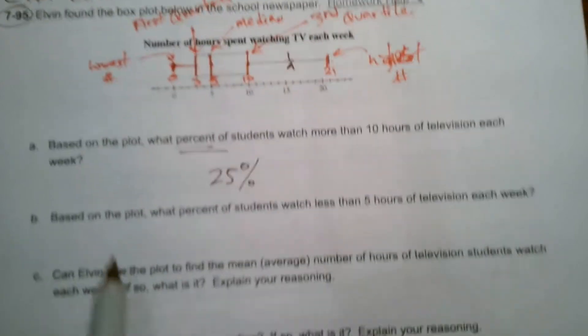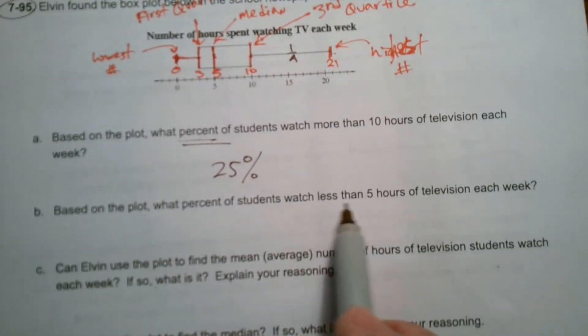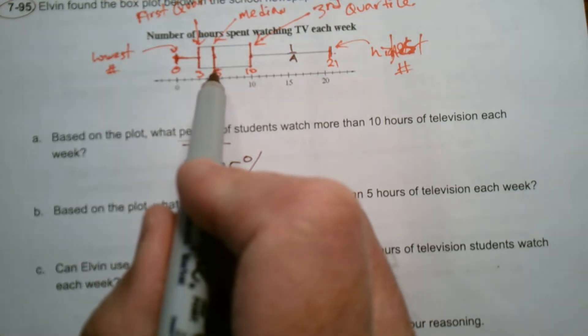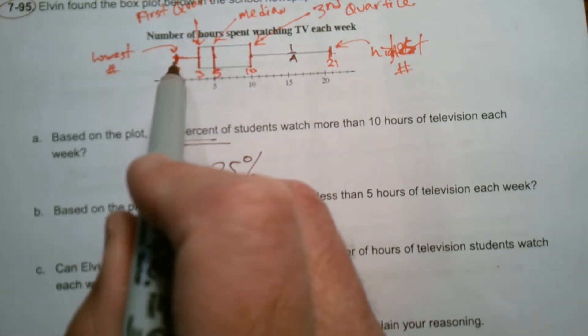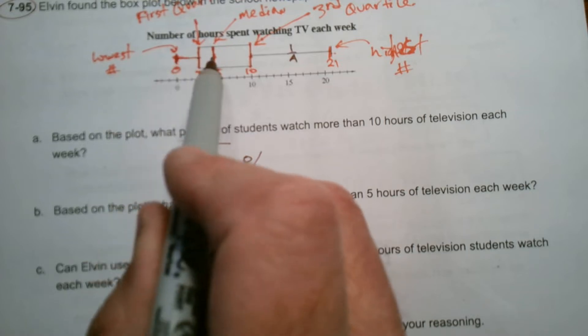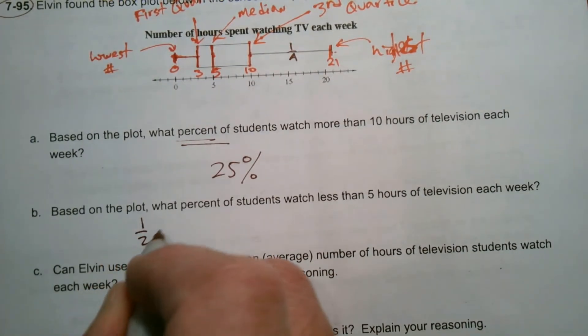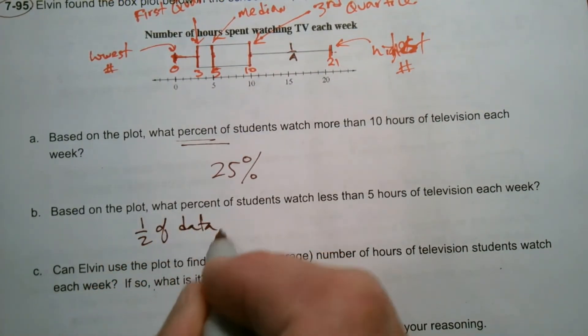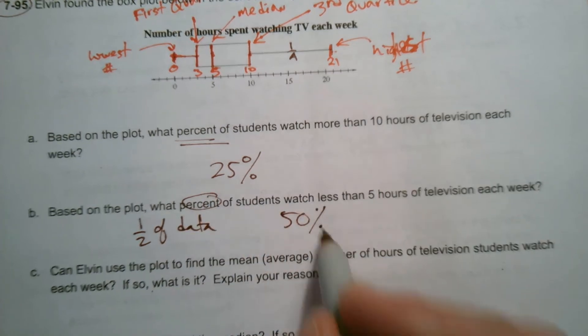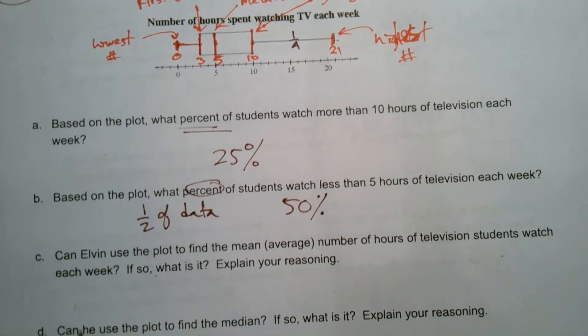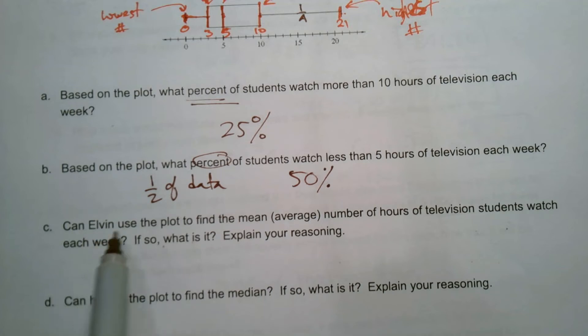And then based on the plot, what percent of students watch less than five hours of television each week? So here's the five less than five. So if each of these are one fourth and from zero to five, that's one half of the data, right? So that's one half of the data. So one half of data, which means that would be what percent would be 50%.